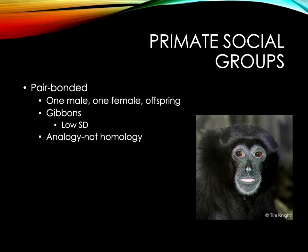Pair bonding in humans is considered an analogy, not homology, because humans evolved pair-bonded sociality separately — other closely related primates are not pair bonded.